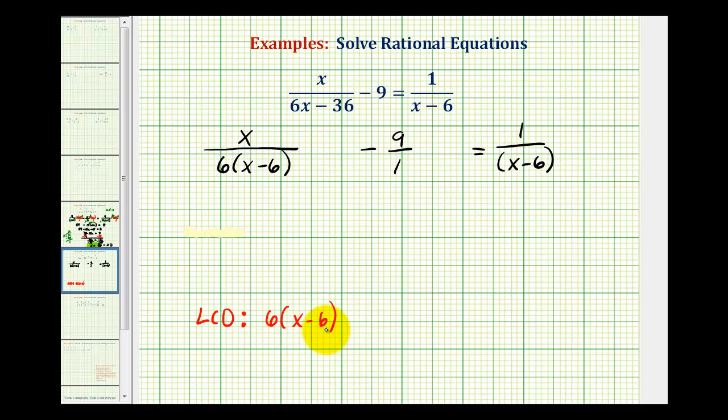So now we're not going to convert to a common denominator. We're actually going to multiply each fraction by six times the quantity x minus six. So here we'll have times six times the quantity x minus six all over one. The same here. And the same here.